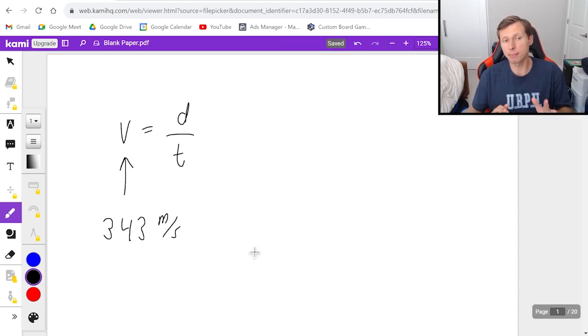Now technically, that number depends on the temperature outside, but we're going to use the standard temperature, which I believe is 20 degrees Celsius, which gives you this number 343 meters per second.